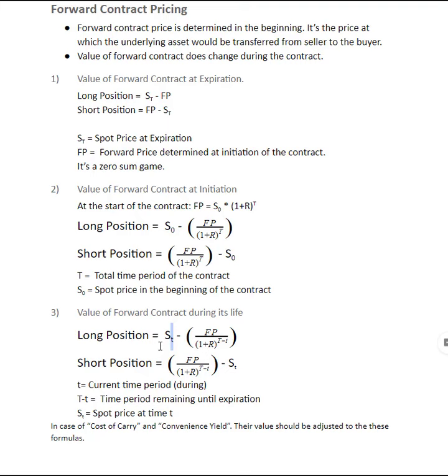Similar to other examples, the short position will be opposite to long position. So it's the present value of the forward price minus the spot at time t.